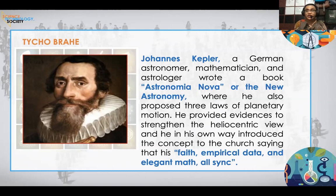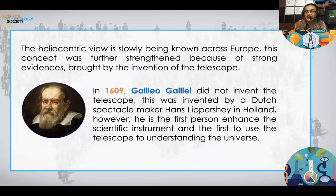The heliocentric view — that the sun is the center of the universe — was becoming known across Europe, further strengthened by the evidence contributed by various scientists. Then in 1608, a new technology was invented: a new instrument that could help further the understanding of the universe — the telescope. In 1608, the telescope was invented, capable of magnifying regular size by a factor of 8.